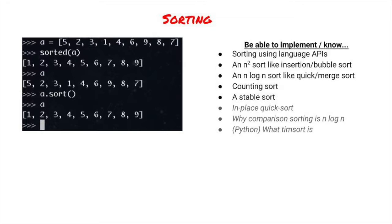For quicksort, you should know how pivoting works and why quicksort is O of n-squared in the worst case. You should be familiar with counting sort, why its runtime complexity can be better than a comparison sort, and in what kinds of conditions. You should also know what it means for a sort to be stable. Optionally, you should know how to implement an in-place quicksort and why comparison sorting has a runtime complexity of O n-log-n at best. Finally, for Python users, you can familiarize yourself with timsort and its performance characteristics.